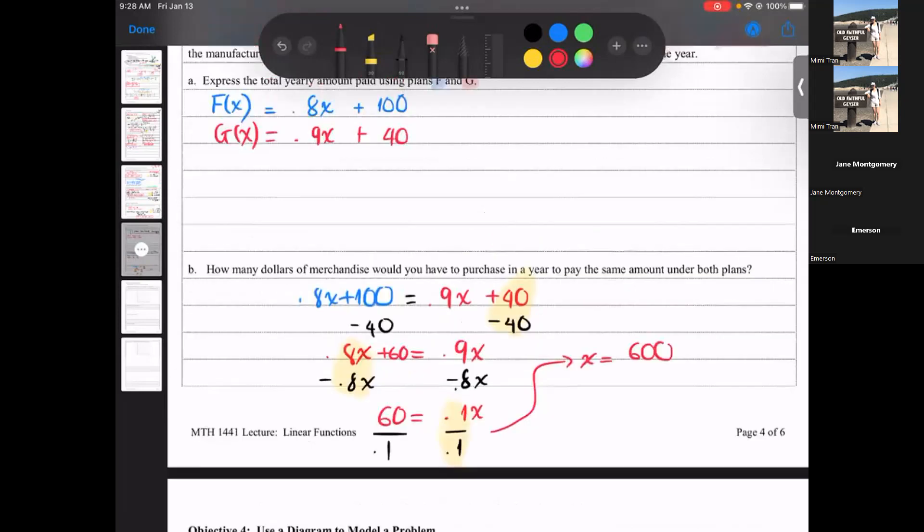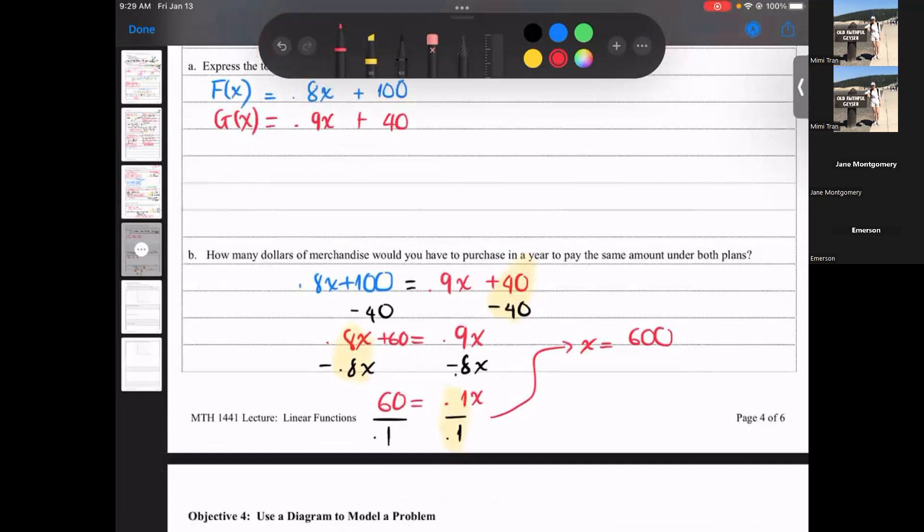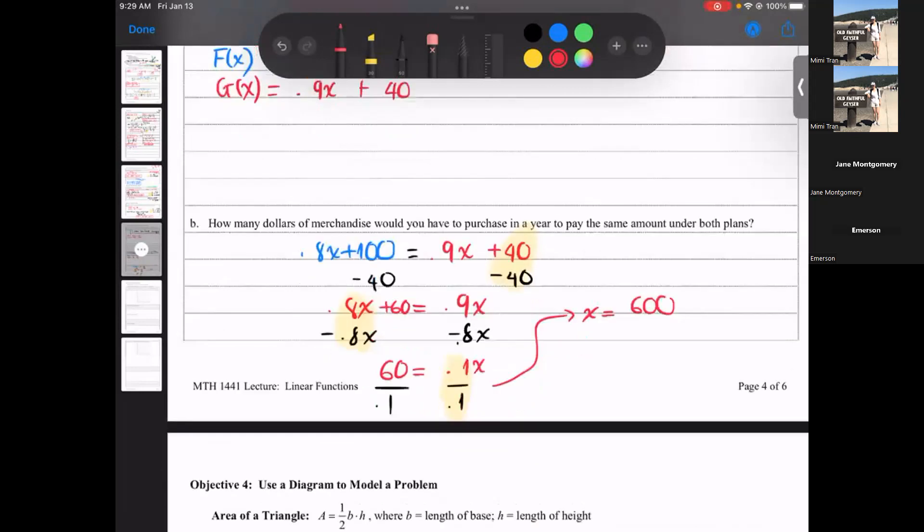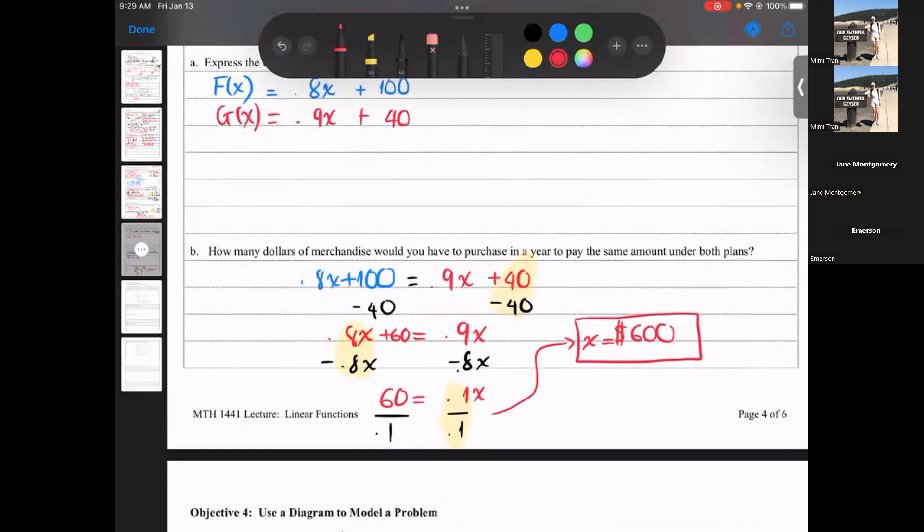600. What should I put for my unit? Dollars of merchandise, right, dollars. $600, $600 worth of merchandise. I think the math is not difficult, it's what, what's difficult is to understand the problem, right? I think that's most of us encounter, like understand the problem before we actually answer it. All right, move on to objective four.